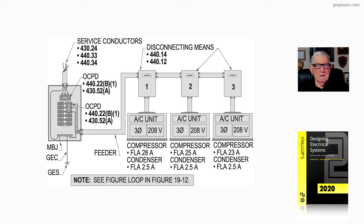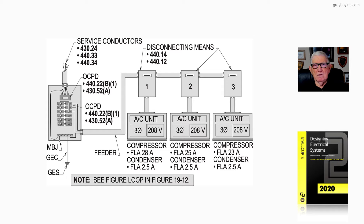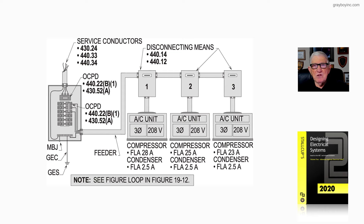Figure 19-11 deals with using the maximum setting of the overcurrent protection device to allow the units to operate without nuisance tripping. Figure 19-10 used the minimum rating, but here we're stepping it up to the maximum because we may have had a tripping problem during operation of these units. The values are the same.